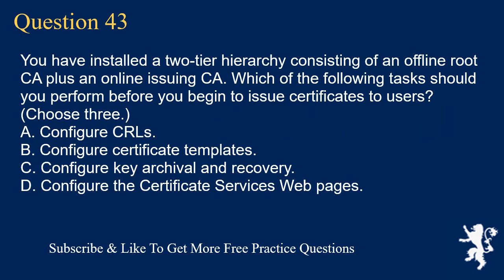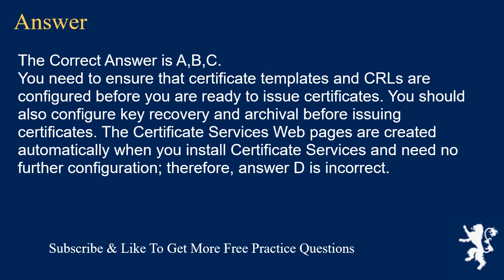Question 43. You have installed a two-tier hierarchy consisting of an offline root CA plus an online issuing CA. Which of the following tasks should you perform before you begin to issue certificates to users? Choose 3. A. Configure CRLs. B. Configure certificate templates. C. Configure key archival and recovery. D. Configure the certificate services webpages. The correct answers are A, B, and C. You need to ensure that certificate templates and CRLs are configured before you are ready to issue certificates. You should also configure key recovery and archival before issuing certificates. The certificate services webpages are created automatically when you install certificate services and need no further configuration. Therefore, answer D is incorrect.